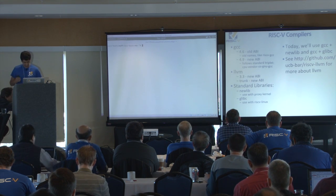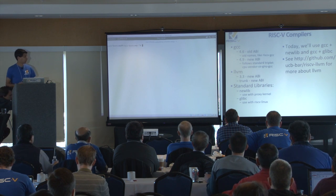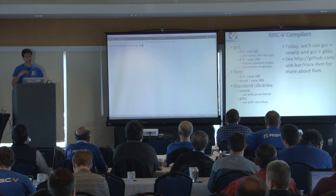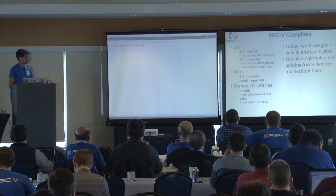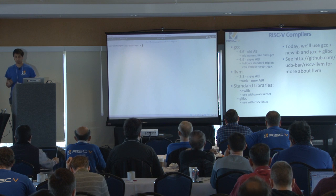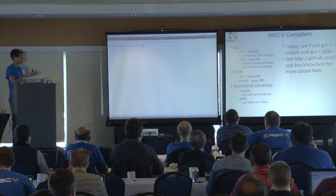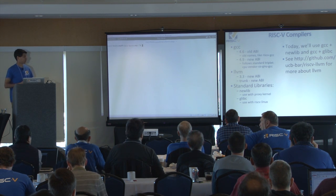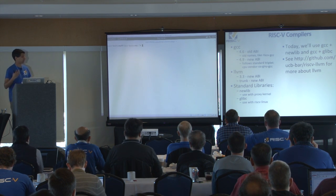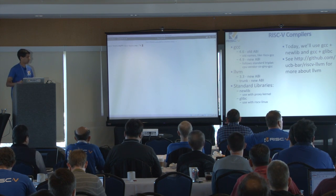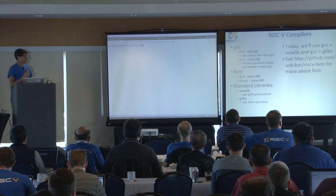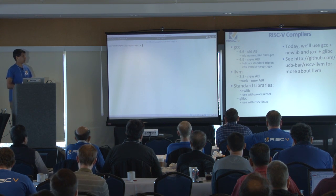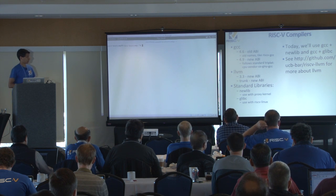We have two compilers: GCC and LLVM, each in two versions. Version 4.6 was our old version following the old ABI. A couple days ago you probably saw Yun-Sup's email about the release of the 4.9 toolchain. The names of the compilers follow the standard triplet of CPU-Vendor-OS, so in the VM they'll be called something like riscv64-unknown-linux-gnu-gcc. We're mainly going to be focused on working with GCC with NewLib and GCC with glibc running on top of Linux.